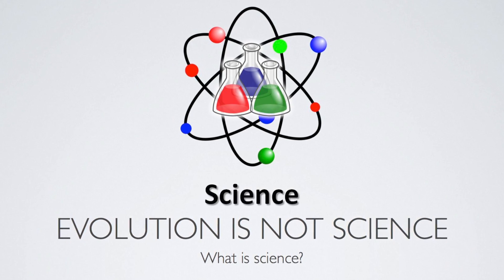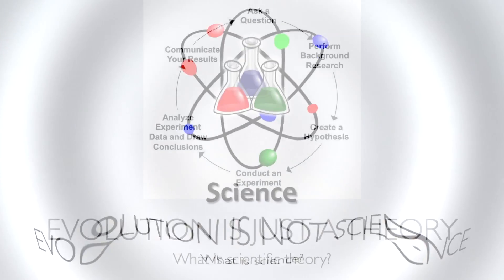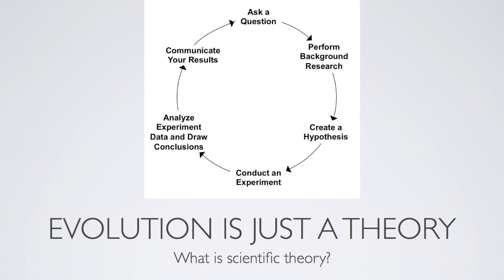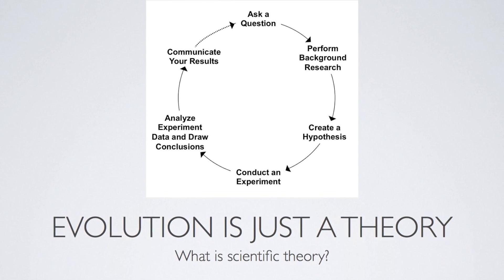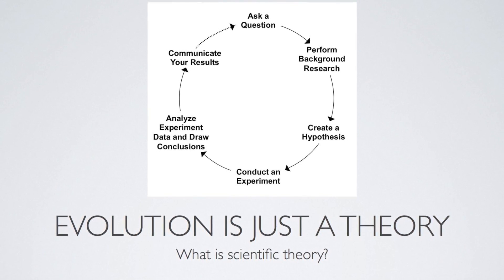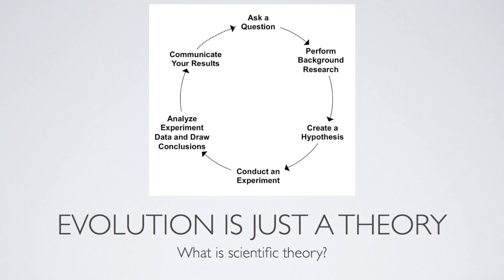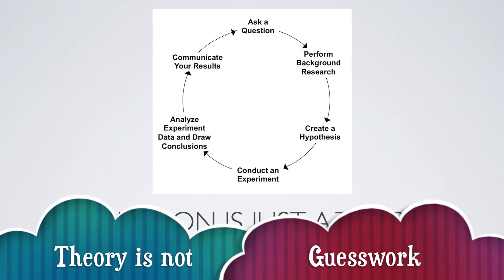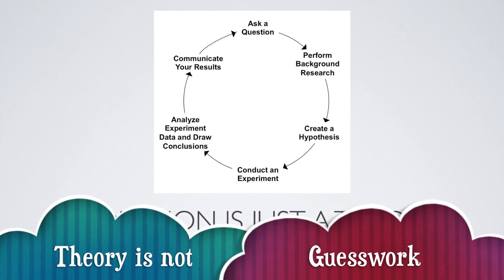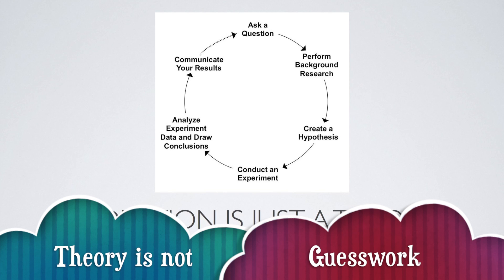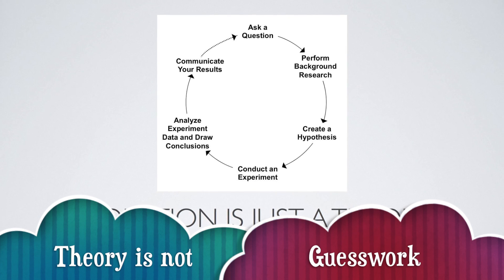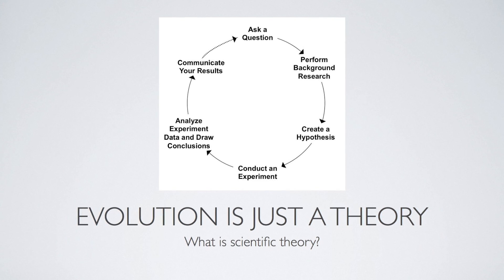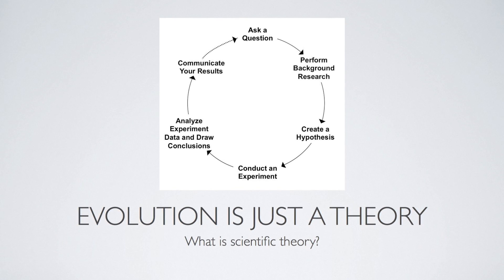Evolution is one of the most well-understood sciences. A scientific theory is a well-substantiated explanation for some aspect of the natural world that is acquired through the scientific method, repeatedly confirmed through observation, experimentation, and peer review by the world's leading scientific experts from process through to conclusion and published in an established and well-known scientific journal.